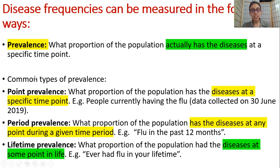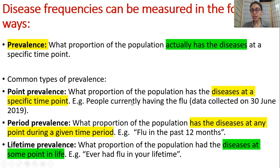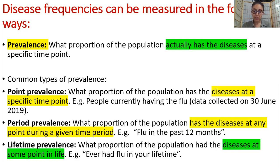Now there are common types of prevalence. Point prevalence is the proportion of the population that has the disease at a specific time point — for example, some people currently having the flu in 2019. People currently having the disease condition is called point prevalence.